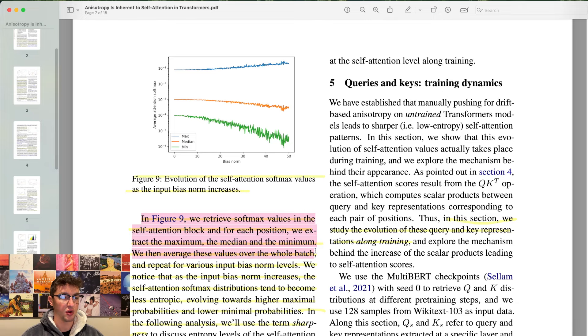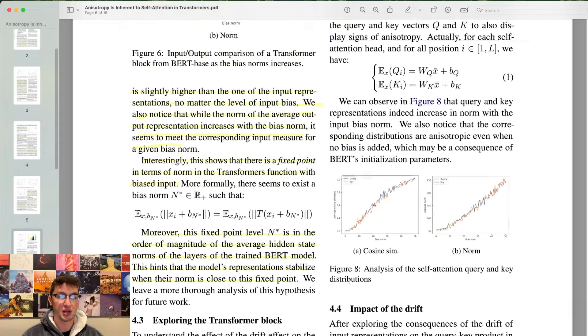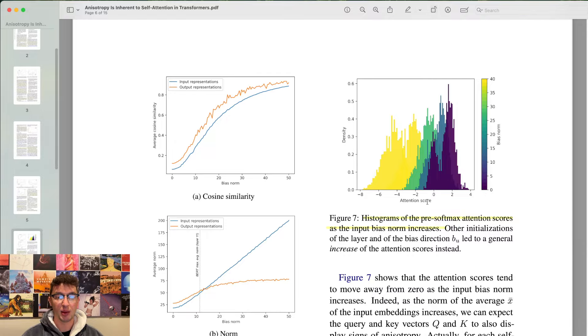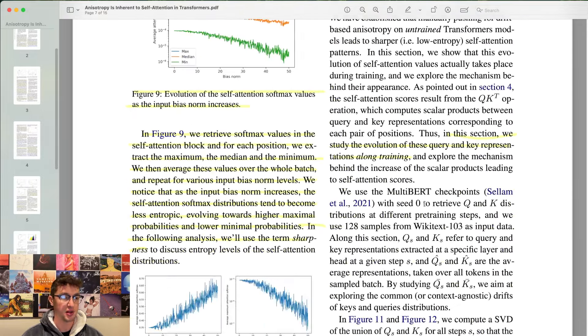In figure nine, we retrieve softmax values in the self-attention block. We extract the maximum, the median, and the minimum. We then average these values over the whole batch and repeat for various input bias norm levels. We notice that as the input bias norm increases, the self-attention softmax distributions tend to become less entropic, evolving towards higher maximum probabilities and lower minimal probabilities. So that's how this was happening here. Meaning when we get towards this yellow area, less entropic as like a sharper distribution of the attention becomes more sure of a certain item. Whereas with no bias norm inputs, a lot more entropic, a lot more even probabilities.